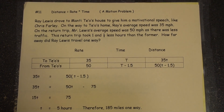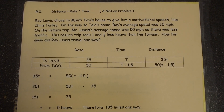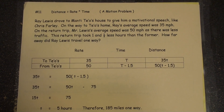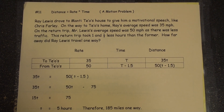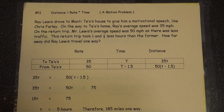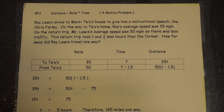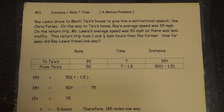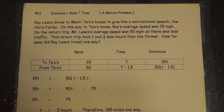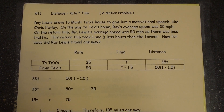Let's take a look at an example of two superstar linebackers, one in the NFL, one in college. Ray Lewis drove to Manti Te'o's house to give him a motivational speech like Chris Farley. On the way to Te'o's home, Ray's average speed was 35 miles per hour, and on the return trip, Mr. Lewis' average speed was 50 miles per hour as there was less traffic. This return trip took one and a half less hours than the former, which means the trip to his house. How far did Ray Lewis travel one way?